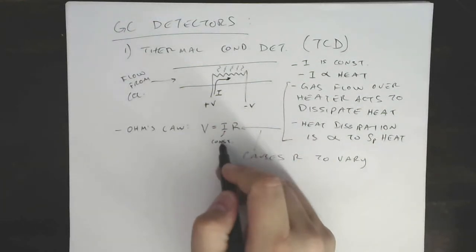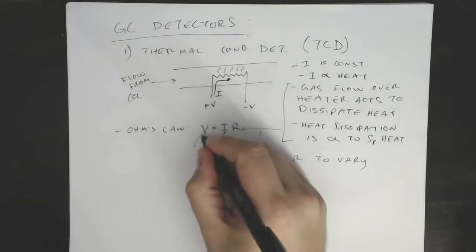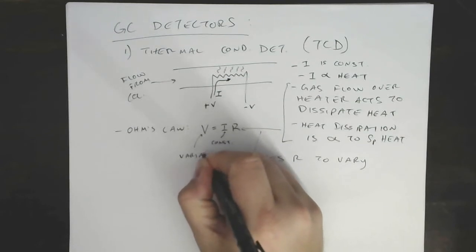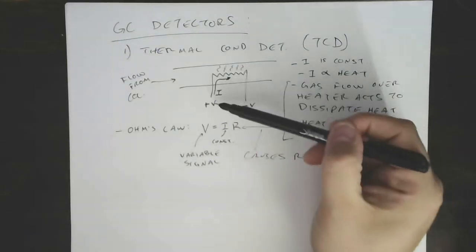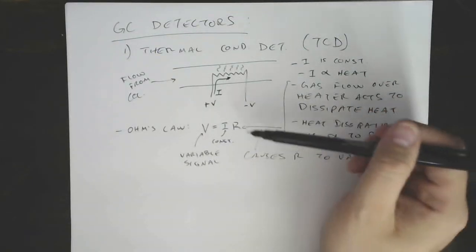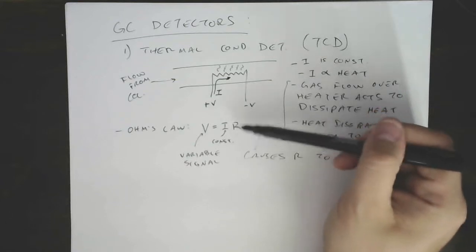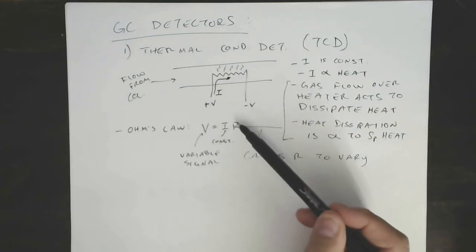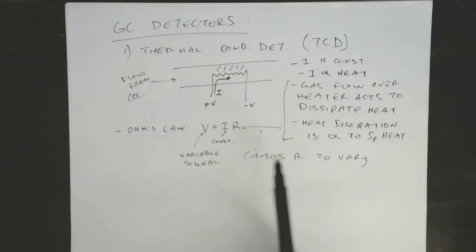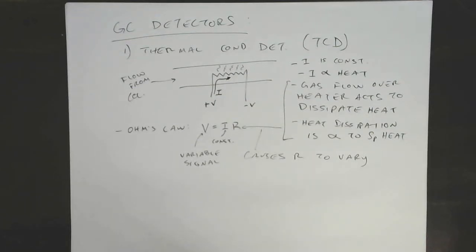If you have a constant current in a system where resistance is changing, you get a variable voltage signal. If you measure what voltage it takes to drive that constant current in a dynamic system where resistance is changing, the voltage you need will change. And because this changes as a function of the specific heat of the gas, it changes as the gas composition changes — which changes when a peak is present or not, ideally proportional to how much extra material is in that peak.